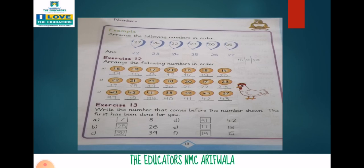Similarly, option C: forty, forty-two, forty-one, thirty-eight, thirty-nine, forty-three, and thirty-seven. We will arrange them in order, writing the smallest number first. Thirty-seven is the smallest number, then thirty-eight, thirty-nine, forty, forty-one, forty-two, and forty-three.